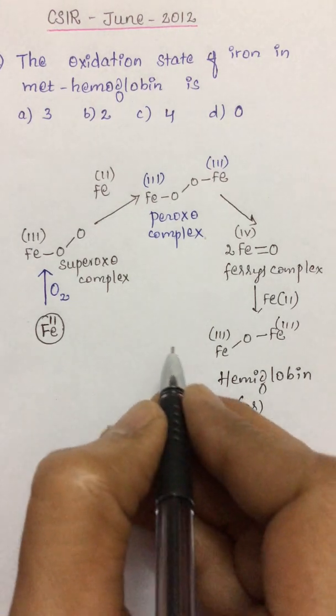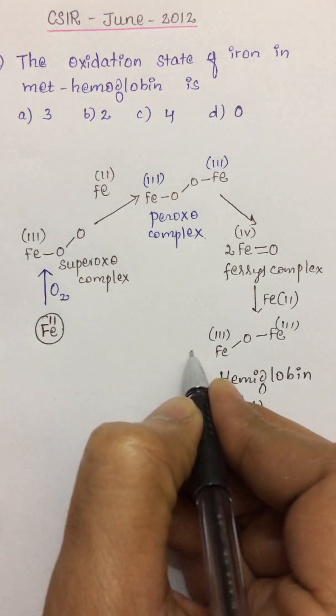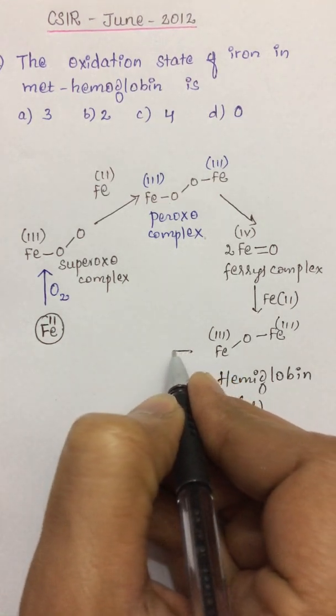But even in the presence of globin chain, at least 2-3% of hemoglobin is converted into hemiglobin, and as it is converting into hemiglobin, the blood will lose its reversible oxygen binding capacity and the person may die.